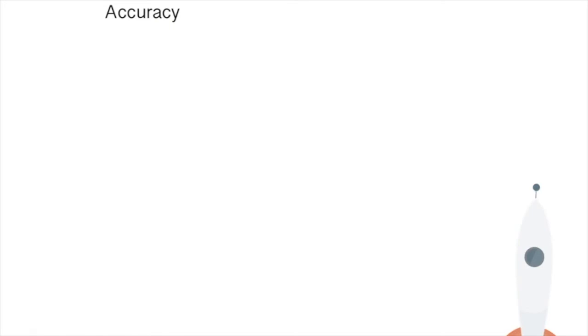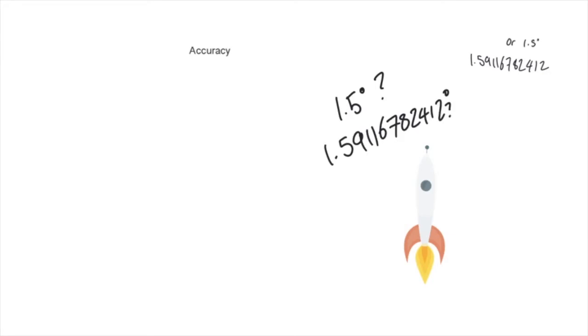Accuracy is hugely important in life and it's also important in numbers. If I was to be sent up in a rocket to space and somebody offered me to either have a calculation of the angle as 1.5 or 1.591167824, the second one would be more accurate and I would probably choose that one just to make sure.